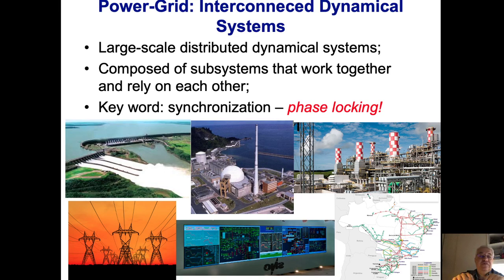Since we have several generators, for the PowerGrid to work properly, all the generators and loads must work in synchronization—phase locking. All these generators, transmission lines, and loads must work in a synchronized way to have phase locking for the system to work properly.